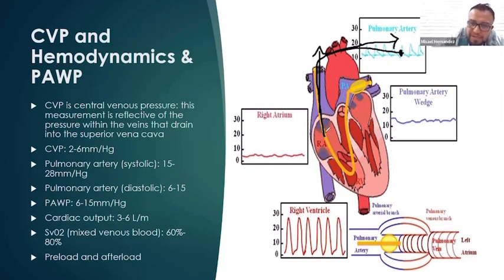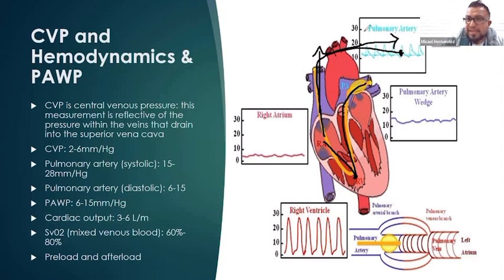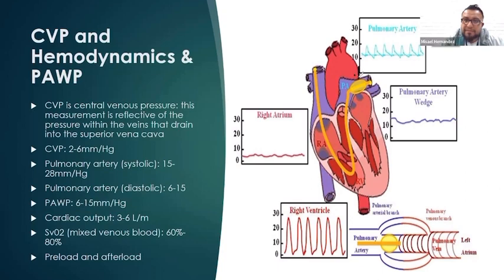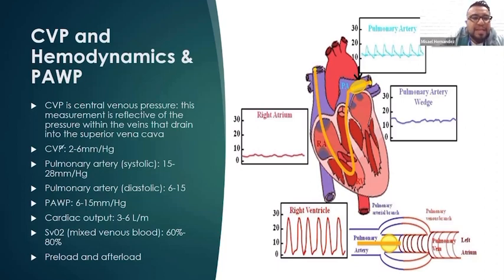With this same catheter, we can measure the CVP of the right atria, which is in uniform with the central veins, the right ventricle, and we can also advance it into the pulmonary arteries. It has a little balloon that inflates or deflates depending on whether we want to measure pressure. Central venous pressure and right atrium pressure are the same thing — 2 to 6 millimeters of mercury.